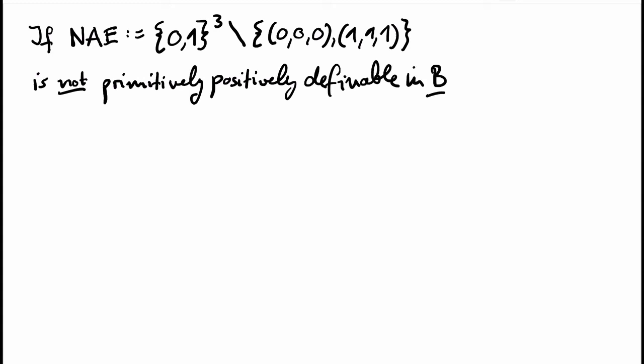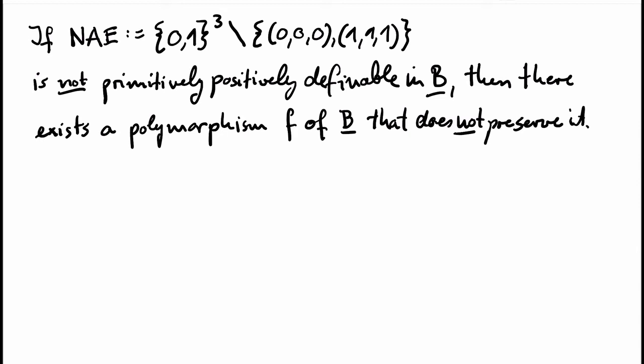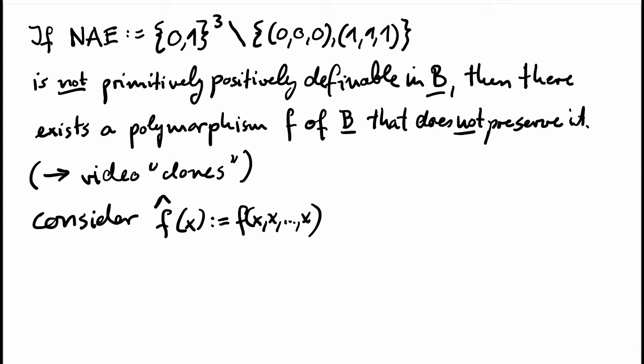Suppose that the ternary Boolean relation that contains all triples except for 0,0,0 and 1,1,1 is not primitively positively definable in B. Let's call this relation the not-all-equals relation. By some theorem that we have learned in the video about clones, there must be a polymorphism F of B that does not preserve this relation. Now we consider the unary operation hat F, which you obtain from F by identifying all arguments of F. So hat F is an endomorphism of B. We have to distinguish three cases.